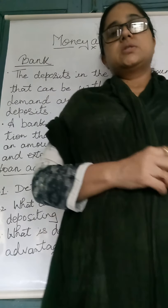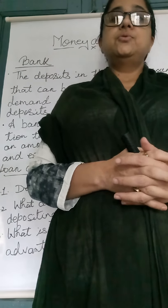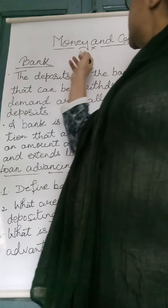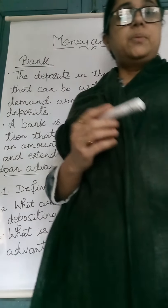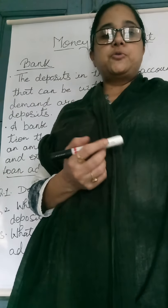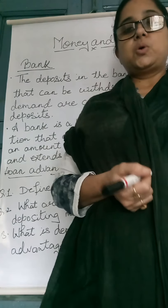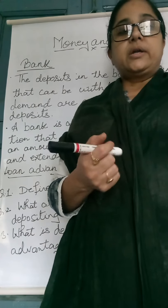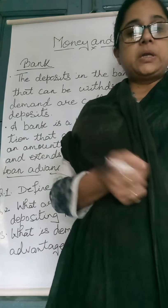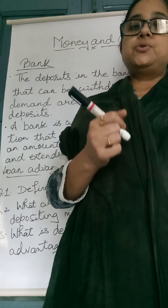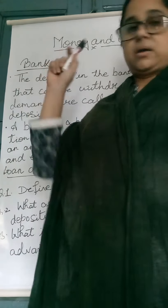Good morning students. Today I am going to continue the chapter money and credit. In the previous video I explained about the barter system, double coincidence of wants, how they work, and modern forms of money. Now today I will explain about bank.